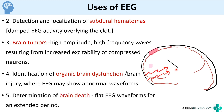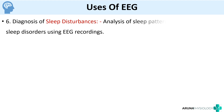For determination of brain death, when there is brain death you will have a flat EEG waveform for an extended period. So the other uses of EEG other than epilepsy include subdural hematoma, brain tumor, brain injury, and brain death. You can also use it for diagnosis of sleep disturbance — you can analyze the sleep pattern and diagnose sleep disorders using EEG recordings.